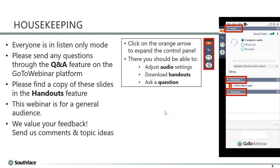Everyone's in listen-only mode. If you have any questions, use the Q&A feature — find it by clicking the little orange arrow that pops out your control panel. Down at the bottom is the questions box; just type what you need in there. You'll also find handouts here — just one for you, a copy of this presentation as a PDF. For audio issues, click through that option; there's not much we can do on our end.